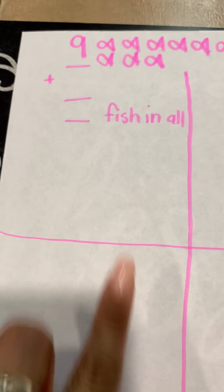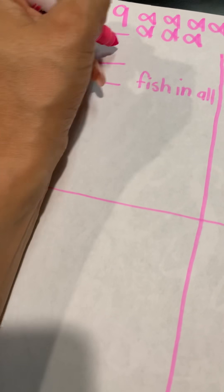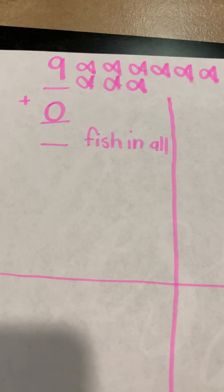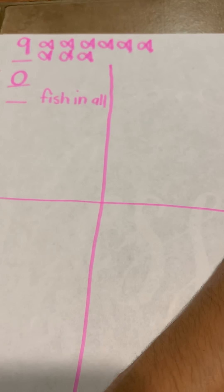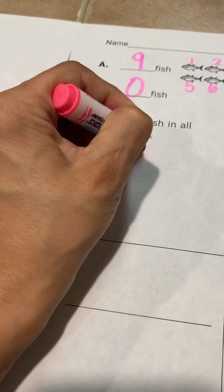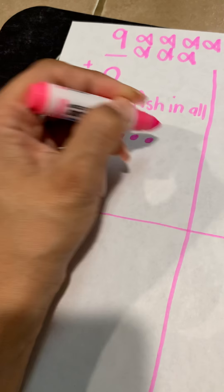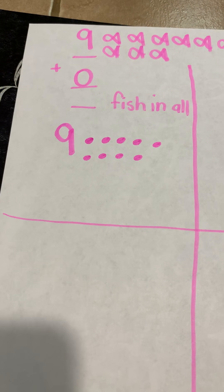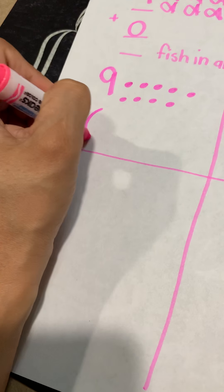How many more fish do we have? What is our second addend? As you can see here, we have zero fish. So we are going to write the number zero. How many fish in all? That's what we're going to find. Our second addend is zero — we don't have any on our second addend.